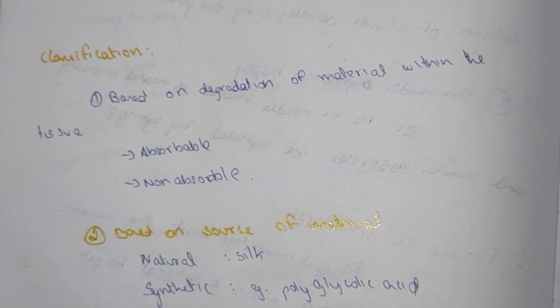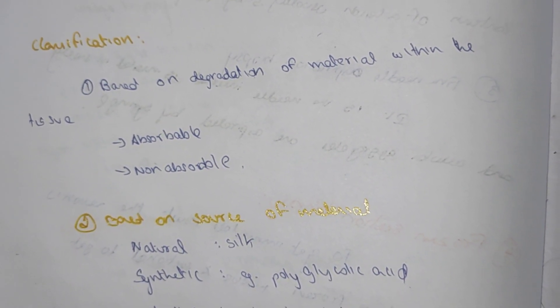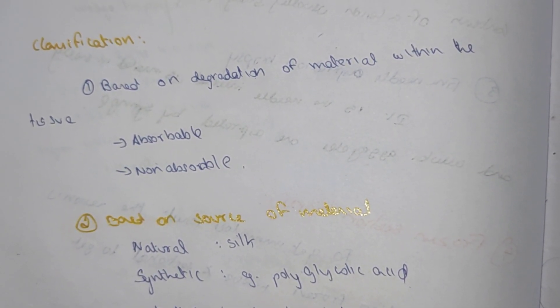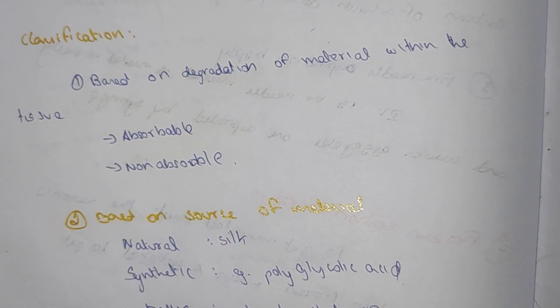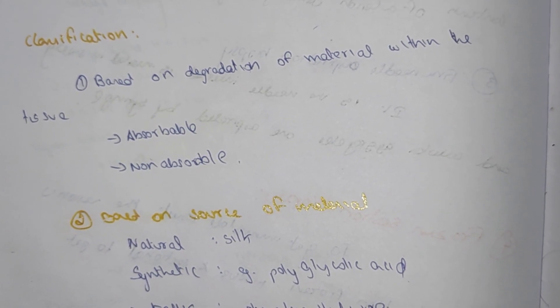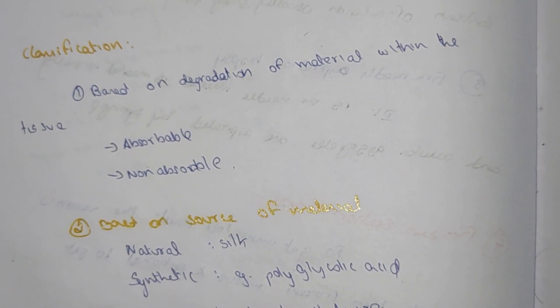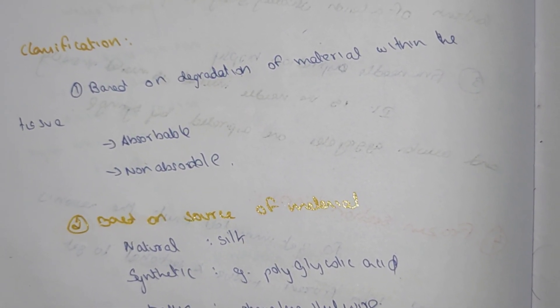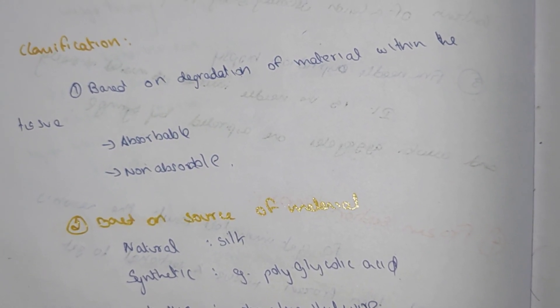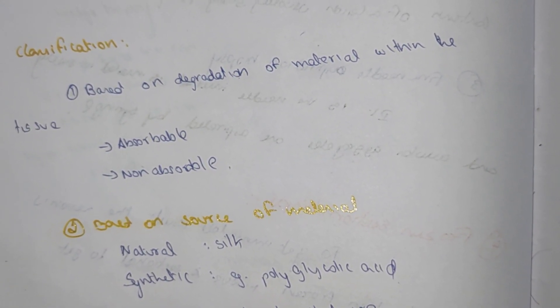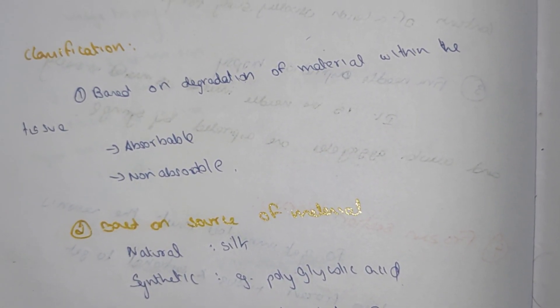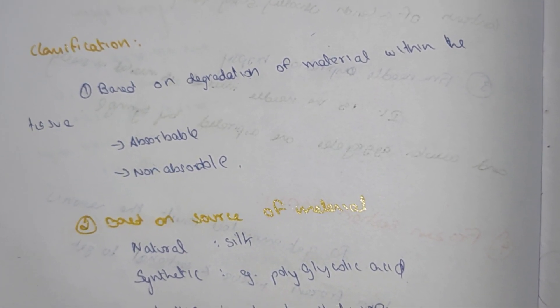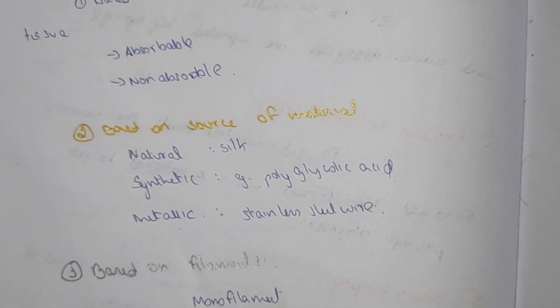Now we will see about the classification. Based on the material's behavior within the tissue, it can be classified into absorbable and non-absorbable. When the doctor says to come for removal, it is non-absorbable type. When the doctor doesn't make an appointment and says it will get absorbed after suturing, it is absorbable suture material.